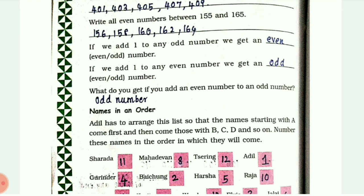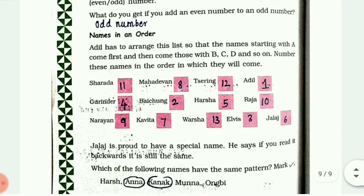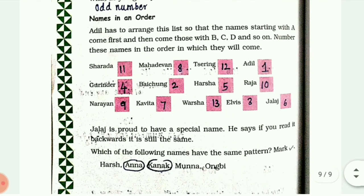Next: names in order. Adil has to arrange a list so that names starting with A come first, then B, C, D, and so on. They need the names in the order they will appear alphabetically. So first is Adil - number 1. We don't have words in B, so I have written 2 there for the next name.